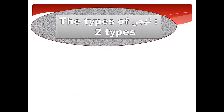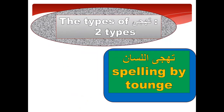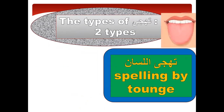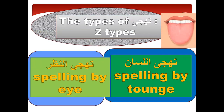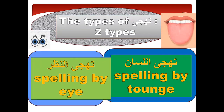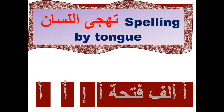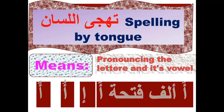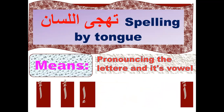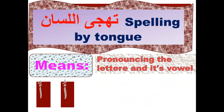There are two types of Tahajji. The first type: Tahajji spelling by tongue. Tahajji spelling by tongue means pronouncing the letter and its vowel. For example: Alif fatha — A. Alif kasra — I. Alif dhamma — U.